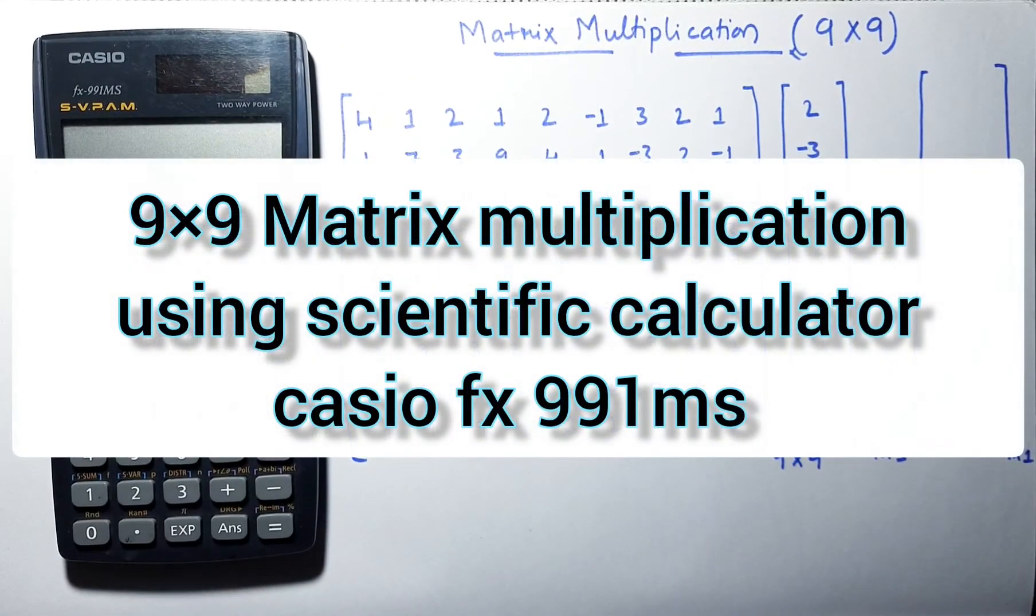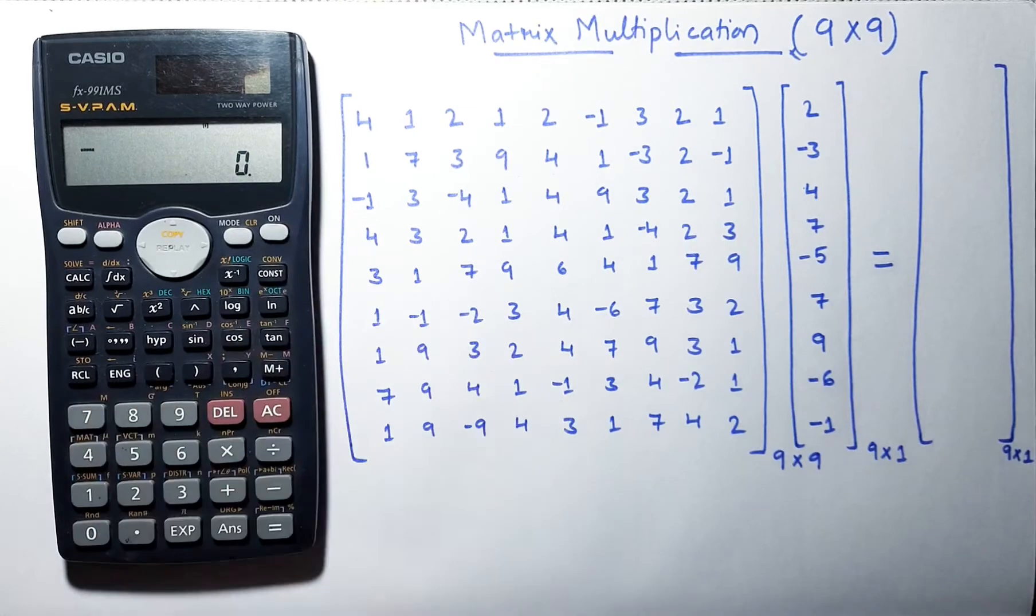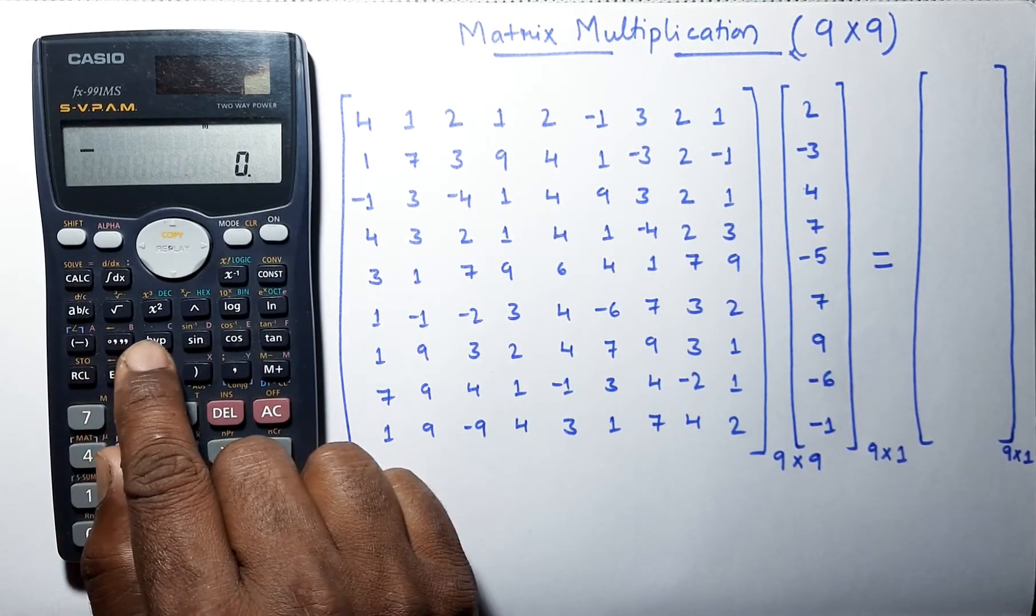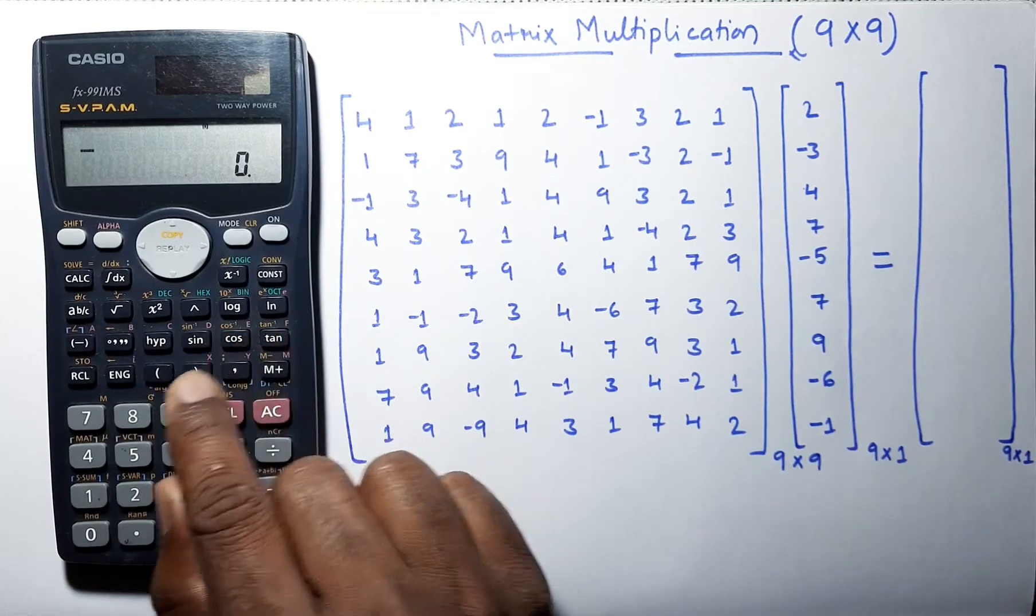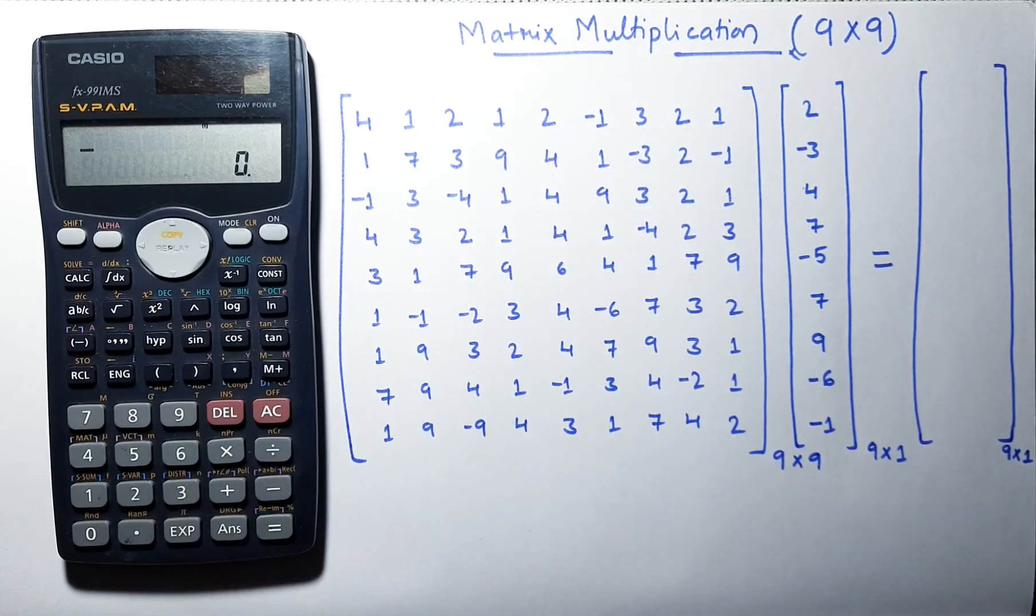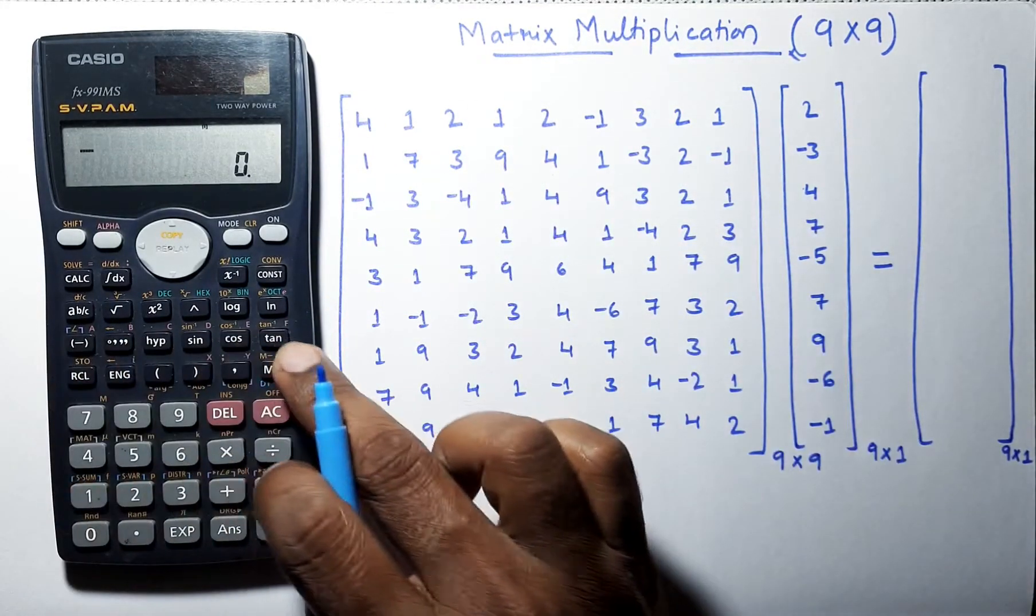In this video, I am going to show you how to multiply higher order matrix using scientific calculator Casio FX 991MS. We have variables here, you can count them. There are 9 total variables. Using them, we will solve this matrix. We are multiplying 9 cross 9 matrix with 9 cross 1 matrix.